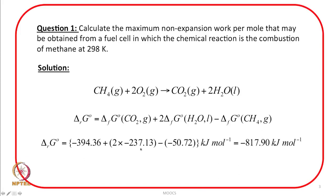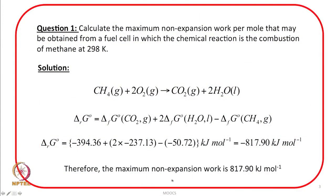Using the free energy of formation data — for carbon dioxide it is −394.36, for water liquid it is −237.13, and for methane gas it is −50.72 kJ/mol — by this addition and subtraction we find that the overall value of reaction Gibbs energy is −817.9 kJ/mol. This change in ΔG equals the maximum non-expansion work that the system can do. Therefore, the maximum non-expansion work is 817.9 kJ/mol.